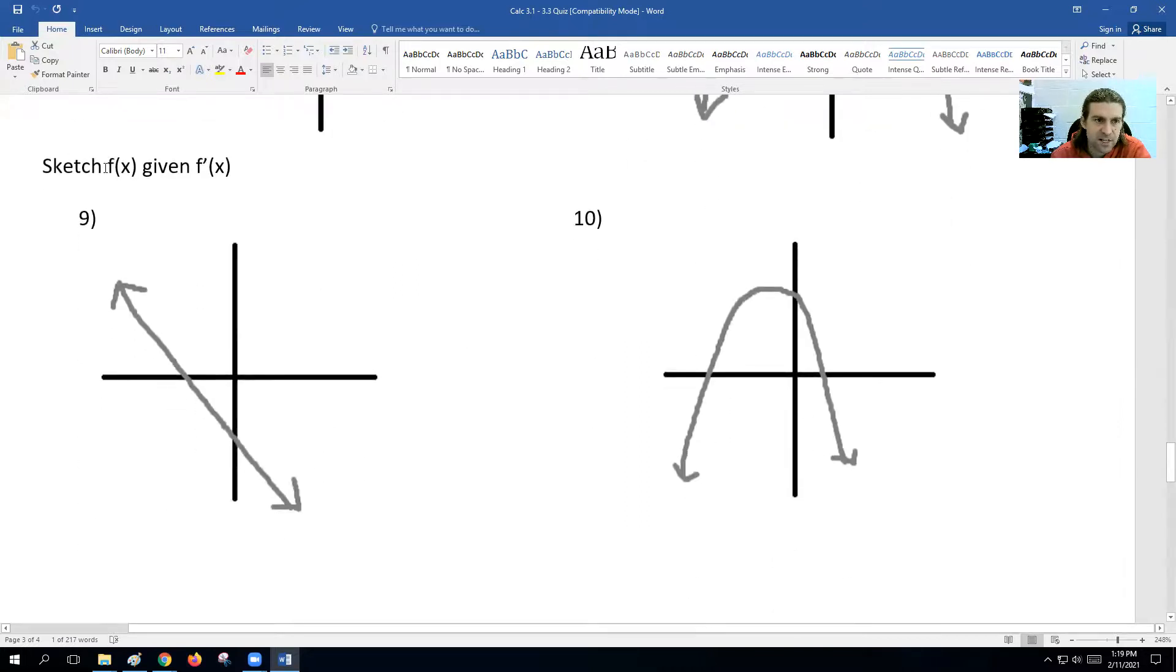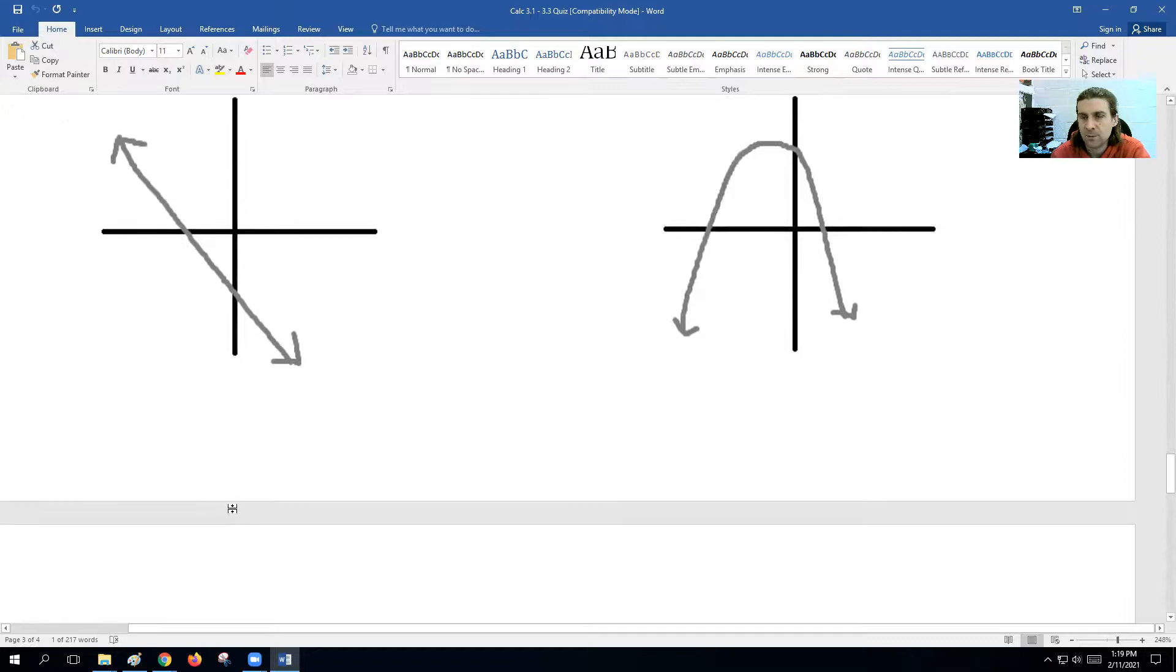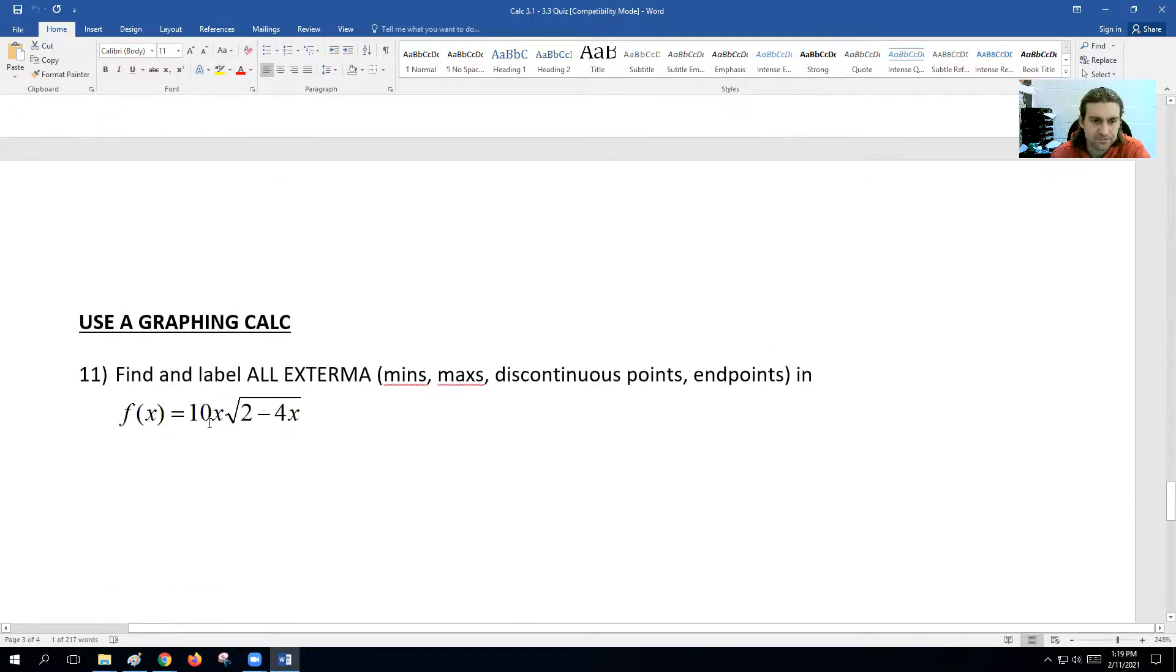These problems here, you're going to sketch the original function given the derivative. If this is the derivative, it's all above and then switching to below. That means the graph needs to be going up and then switch to going down right at this spot. Check the review worksheet out if you need more help with that.